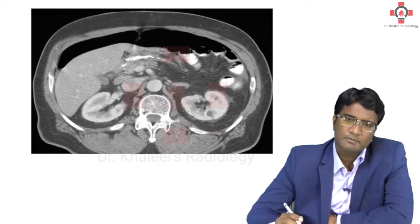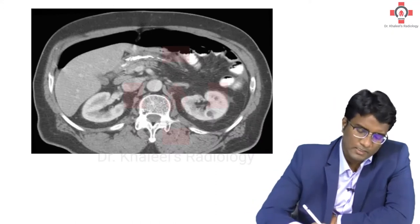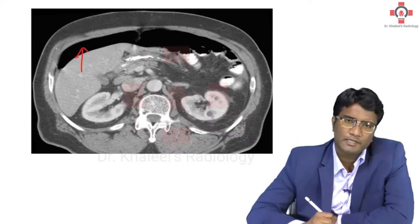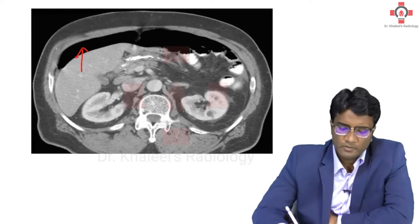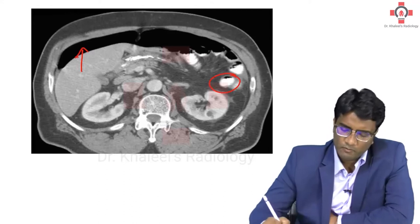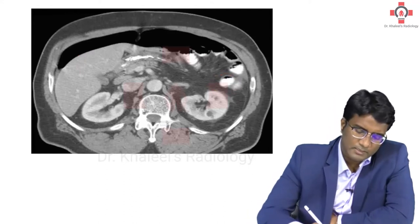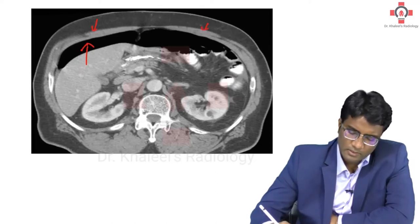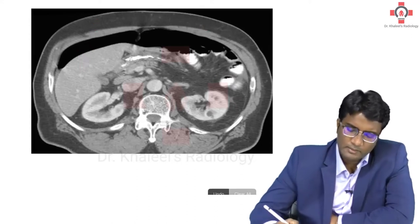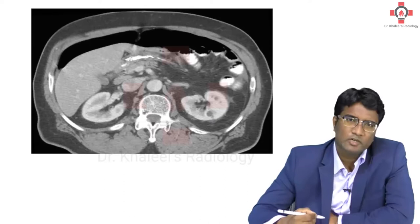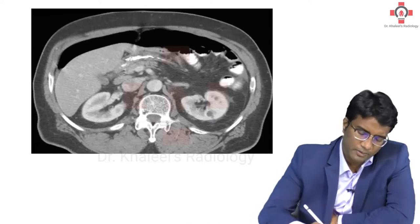Look at this other image which is showing you a large free air which is anterior to the liver. This is pneumoperitoneum. This is how intraluminal air would be — it will be bounded by the wall of the bubble. But here, this is extraluminal air, and this is your abdominal wall muscles. So that air is not bounded by the bubble wall; it is extraluminal air. This is pneumoperitoneum.